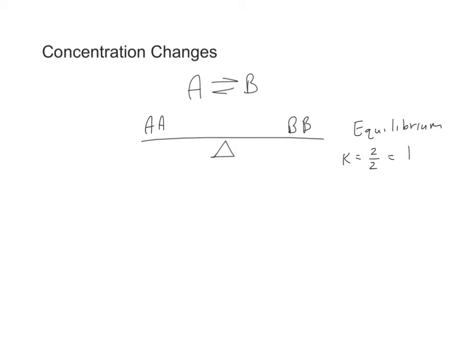The first disturbance we're going to talk about are concentration changes. I'm showing a very simple system where A is in equilibrium with B. I'm going to use a seesaw analogy to explain equilibrium and how disturbances can affect it. On the left, I have two A's, and on the right, I have two B's. If these reflected their concentrations, then my K value, my equilibrium constant, would be 2 over 2, or 1.